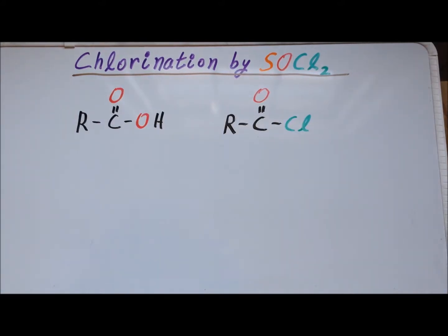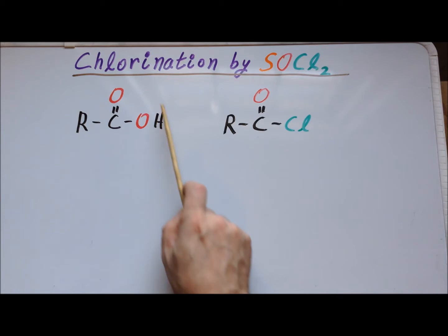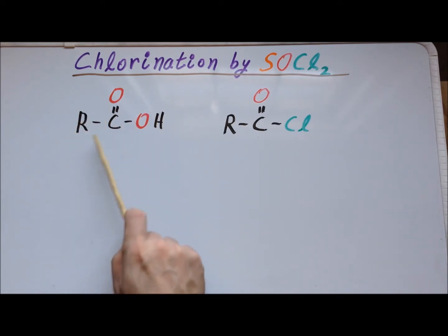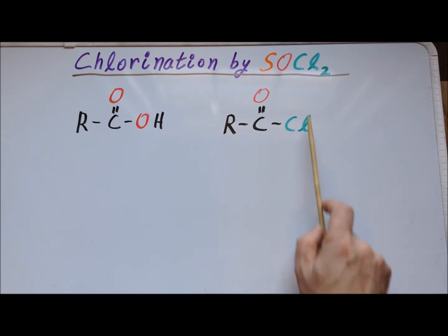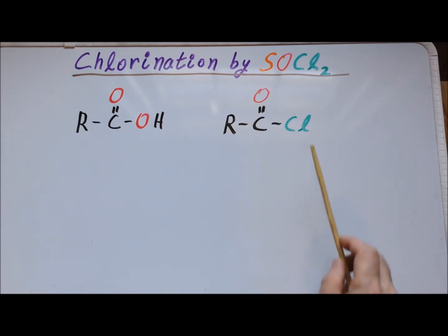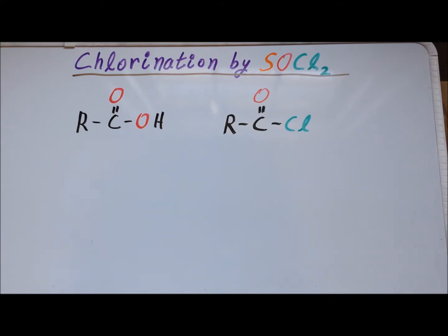Recall that carboxylic acids have the general structure shown at the left, with a so-called carboxyl group and some alkyl group attached to it. On the right-hand side, we have the so-called acid chloride, where we effectively replaced a hydroxyl group by a chloride group. Acid chlorides are particularly useful because they act as an activated form of the carboxylic acid, leading to greater yields and fewer side reactions.